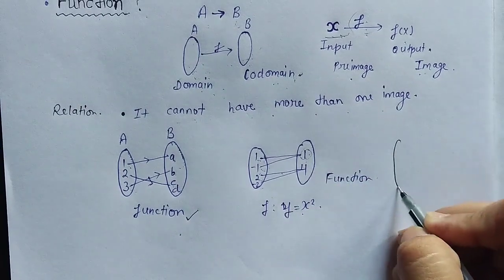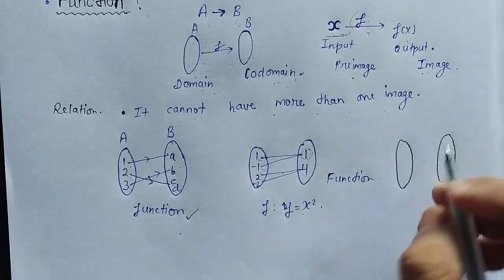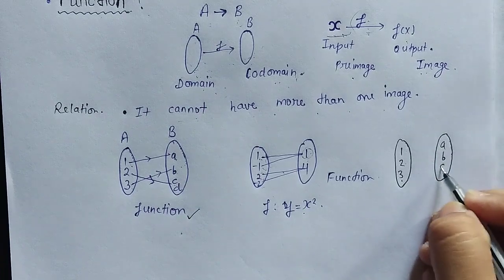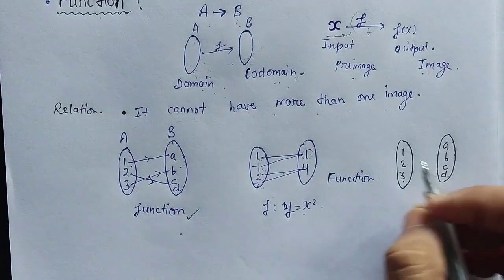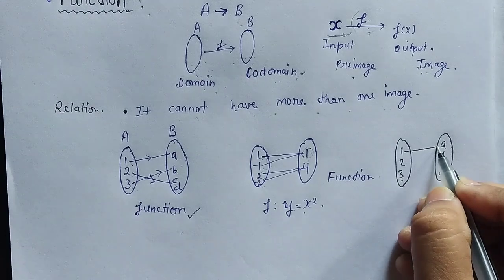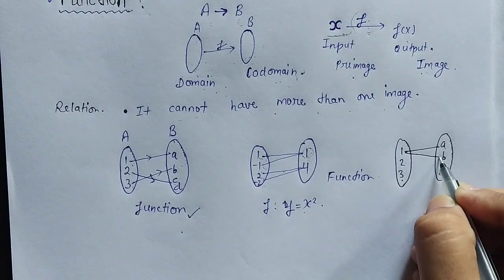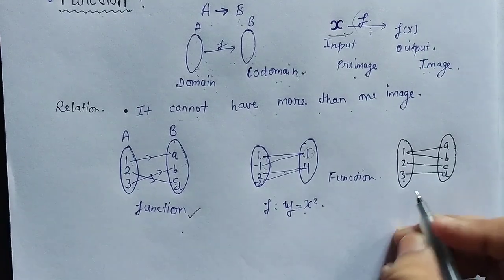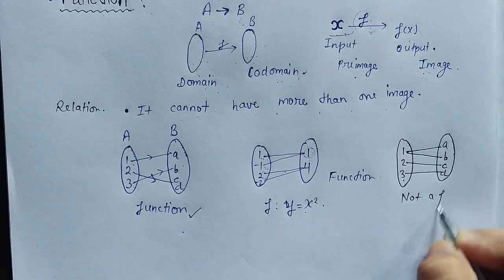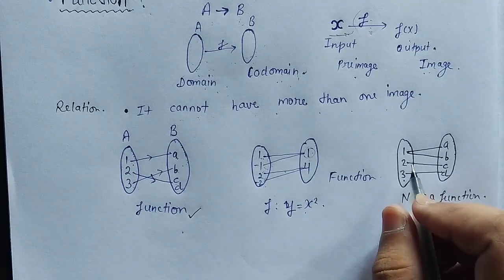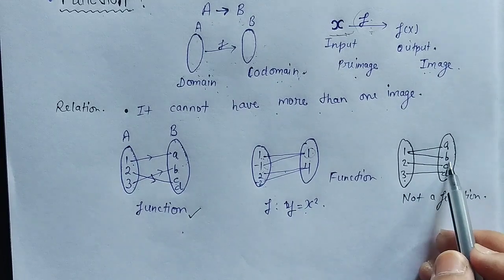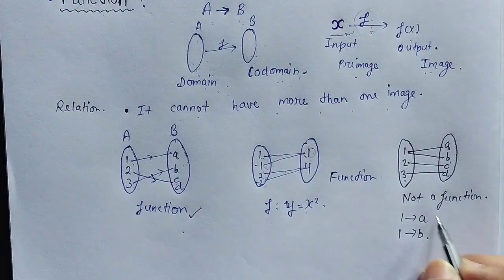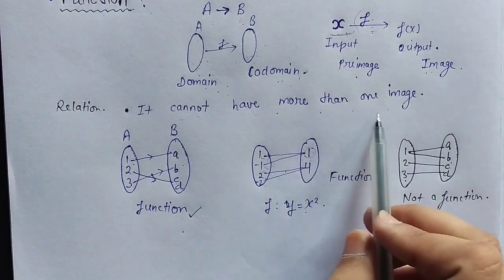Now the third example: suppose I have 1, 2, 3 in the domain and A, B, C, D in the co-domain, where 1 is mapping to A and at the same time 1 is also mapping to B, 2 is mapping to C, and 3 is mapping to D. So it is not a function, because 1 gets more than one image — A and B. Since 1 is mapping to both A and B, it has more than one image and cannot be a function.